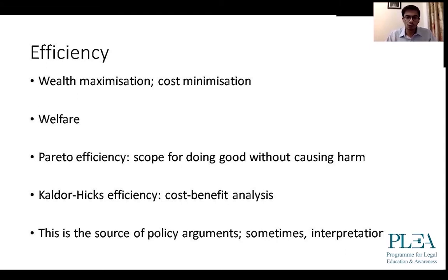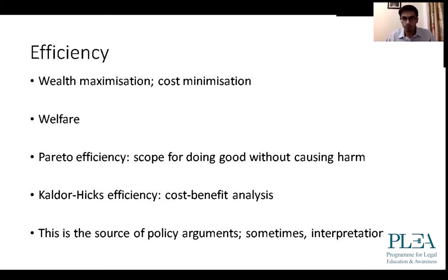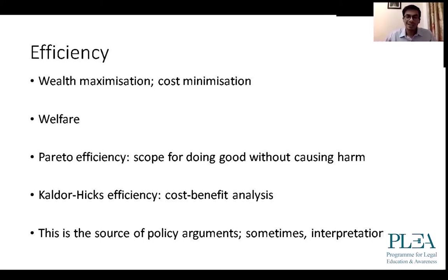One particular concept is called Pareto efficiency — a minimum concept of efficiency that economists employ. The idea is broadly that if you are able to do good for some people without causing harm to anybody, then that is a good thing to do: you have produced only positive outcomes without any negative outcomes. Something is Pareto efficient as long as it causes betterment without anybody being harmed. And this is not a cost-benefit analysis — it's that nobody is harmed at all, but some people are getting better off.